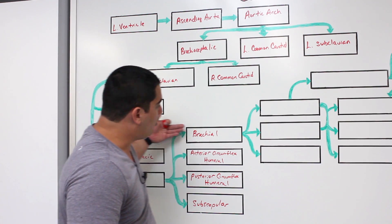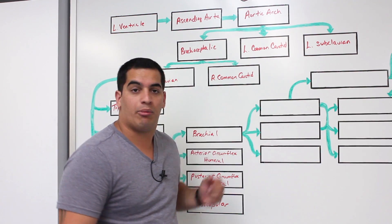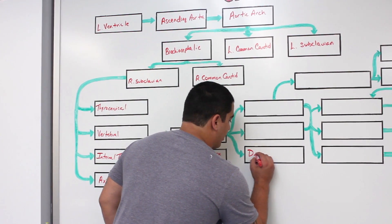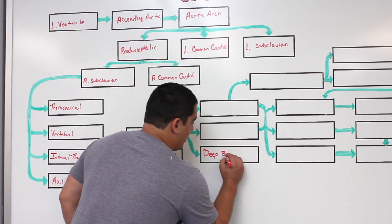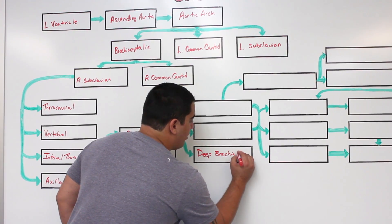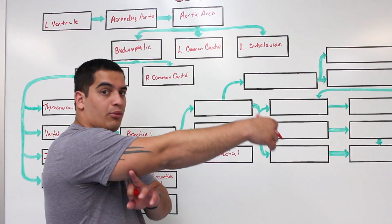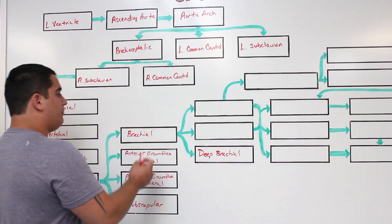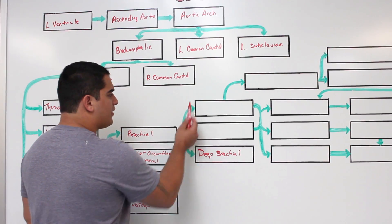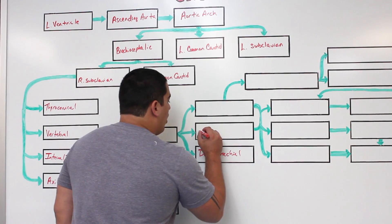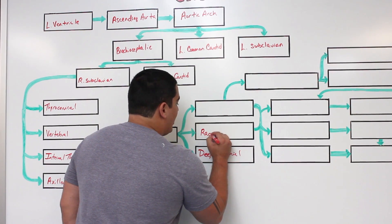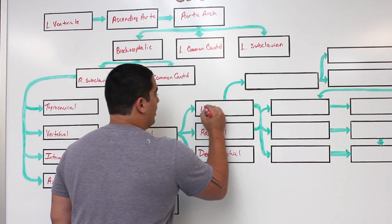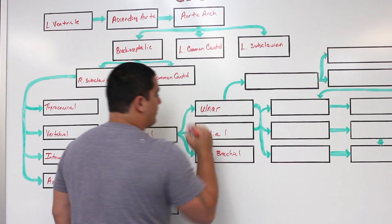The brachial artery will then give off three branches. One branch is called the deep brachial artery — it's deep because it goes deep within the arm and supplies the posterior muscles of the arm, like the triceps. Then the brachial gives off two other branches: one is called the radial artery, and the other one is called the ulnar artery.